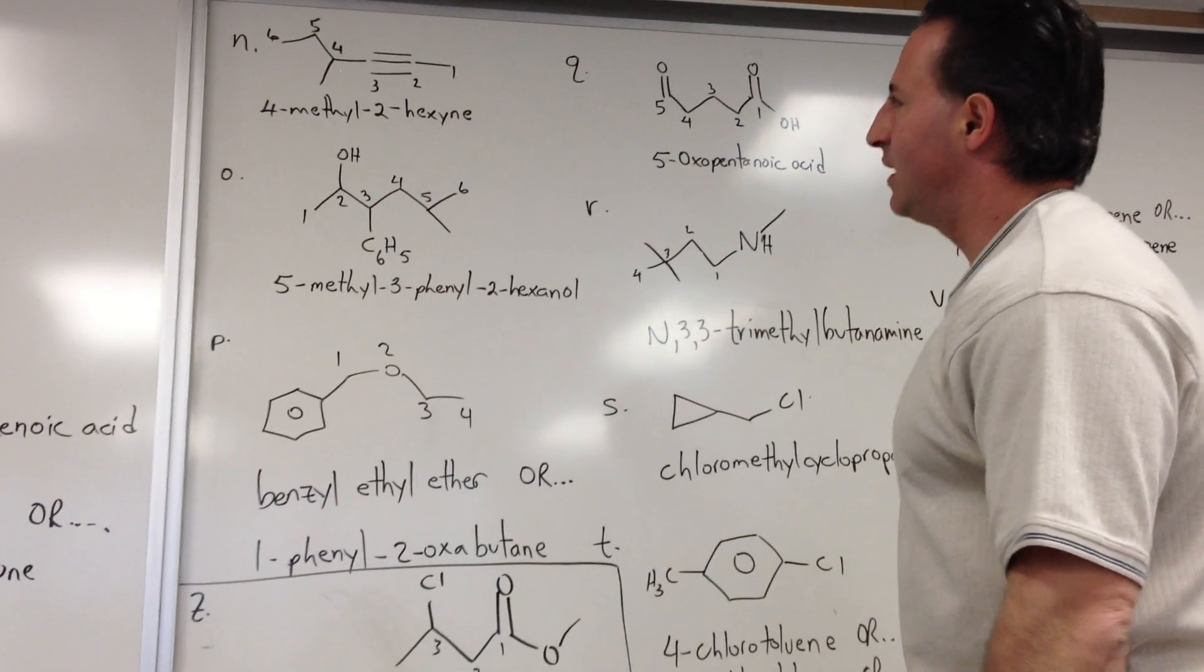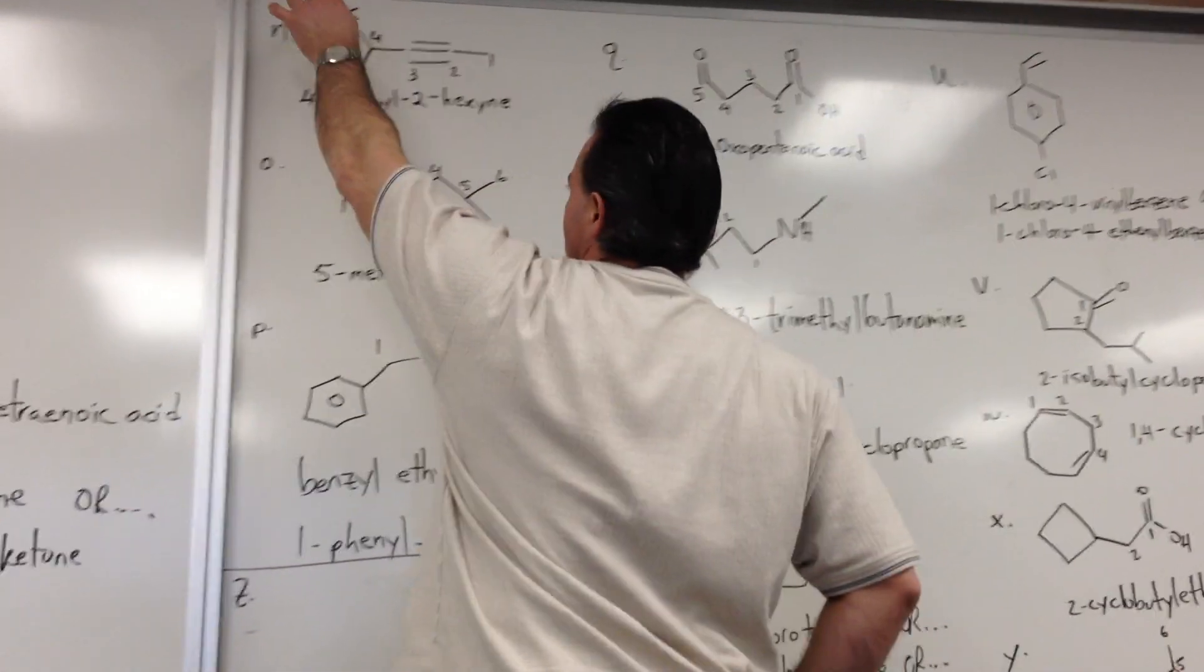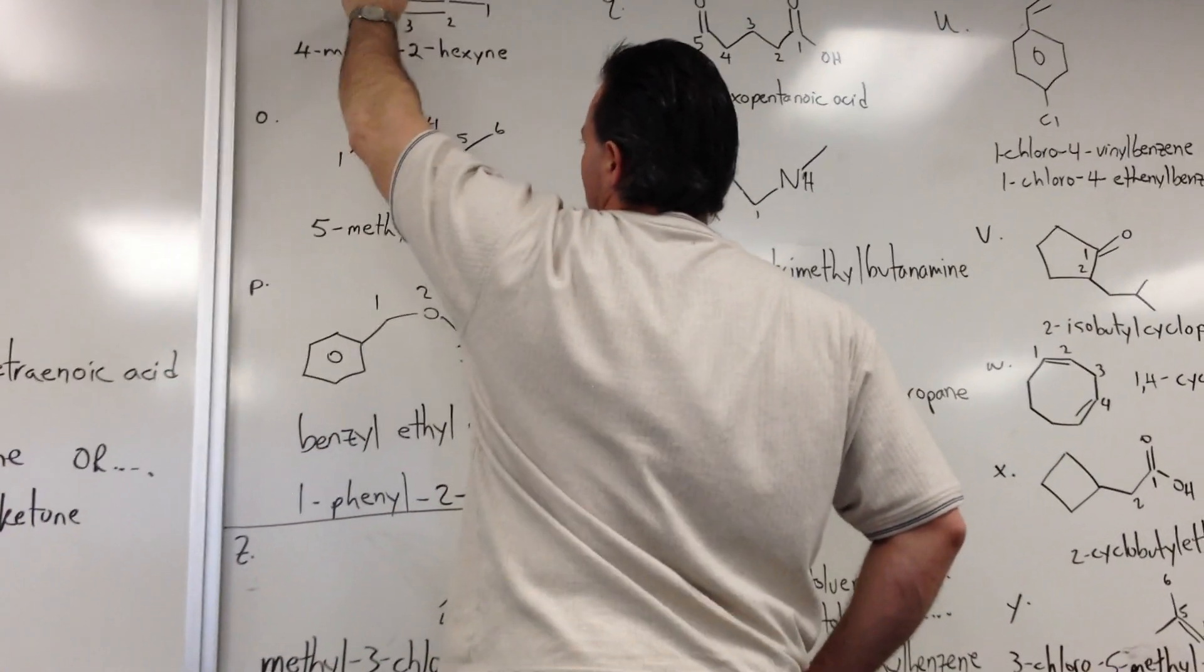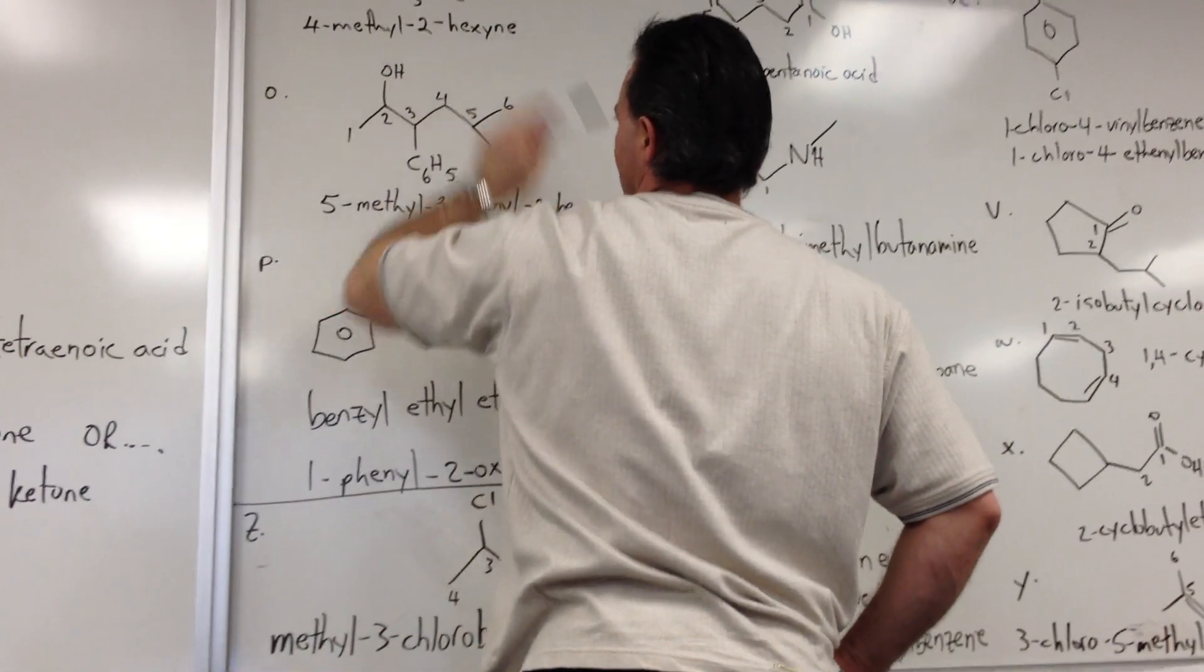N is a hexyne. This is the longest carbon chain of 6. Triple bond at the 2nd position with a methyl group of course, so we say 4-methyl-2-hexyne.